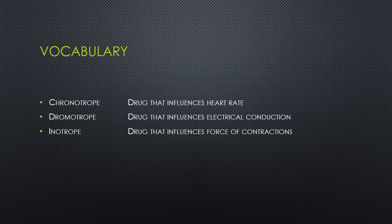Chronotropic drugs influence heart rate. A positive chronotrope will speed up the heart rate, and a negative chronotrope will decrease the heart rate. A dromotrope is a drug that influences electrical conduction or automaticity. A positive dromotrope increases the ability of cells to conduct electricity, and a negative dromotrope decreases that ability, which also will influence heart rate.